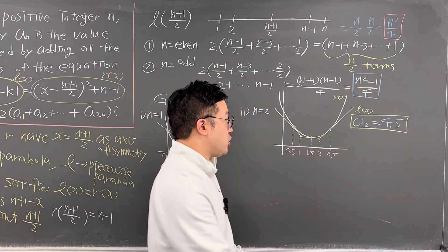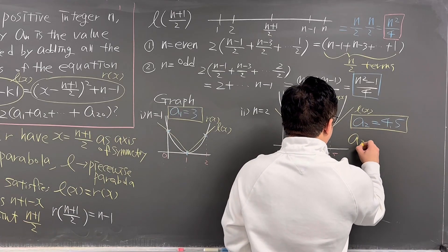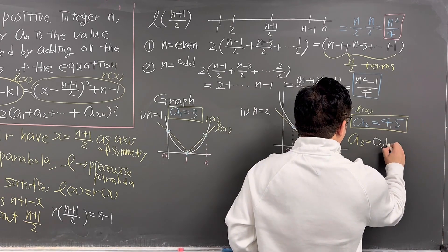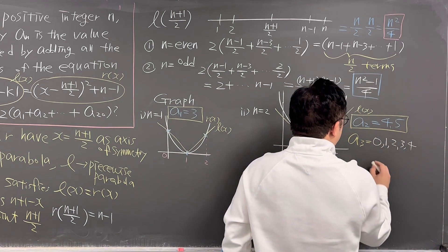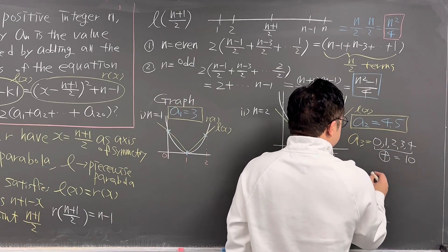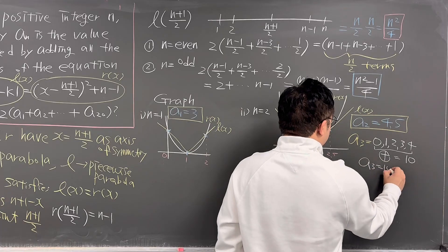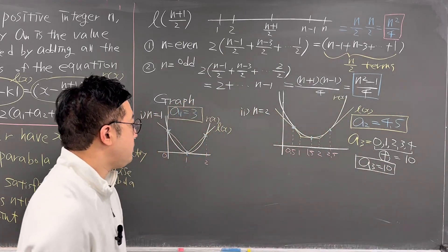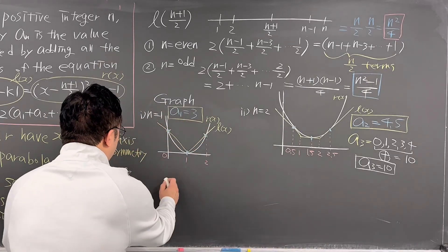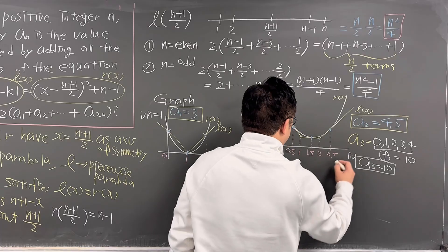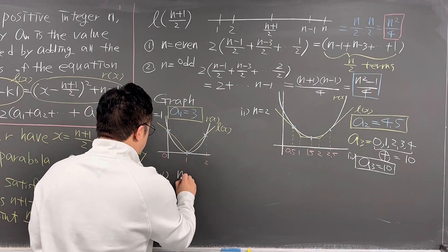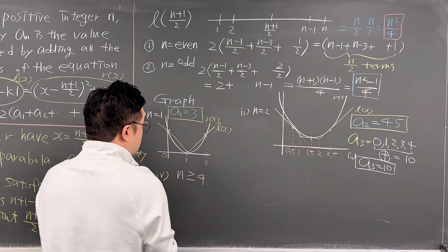Using the same logic, for n = 3 we have a total of five roots: 0, 1, 2, 3, and 4. Adding them up, a3 = 10. When n is greater than or equal to 4, the graph changes — we have only two roots that are symmetric with respect to (n+1)/2.